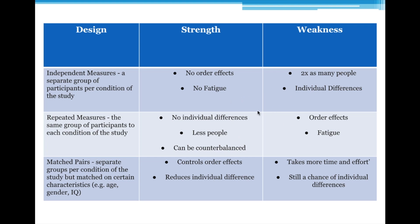For a repeated measures design, you don't get those individual differences. In the study where the same participants were running with music and without music, running ability is taken out of the equation. It doesn't matter how good or bad they are — you could have Usain Bolt at one end and it doesn't matter, because what you're testing is whether the music changed their speed. You're measuring the change in running speed with the music. So there are no individual differences.